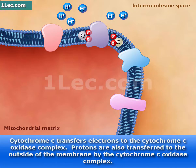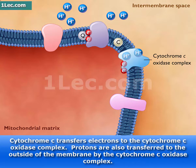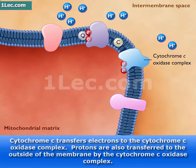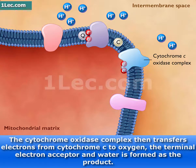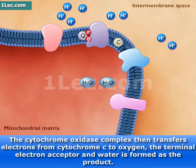Cytochrome C transfers electrons to the cytochrome C oxidase complex. Protons are also transferred to the outside of the membrane by the cytochrome C oxidase complex, which then transfers electrons from cytochrome C to oxygen — the terminal electron acceptor — and water is formed as the product.